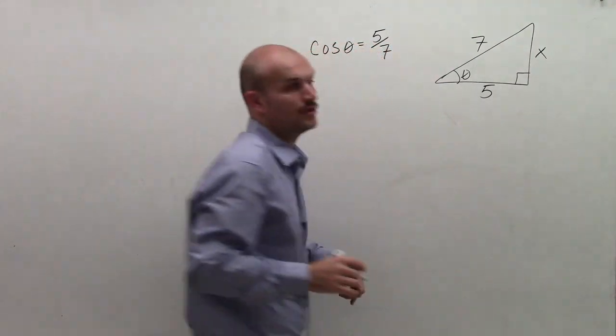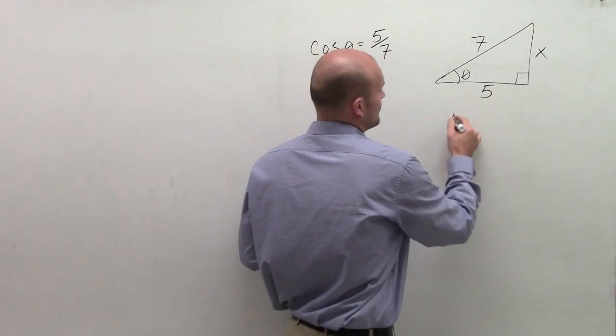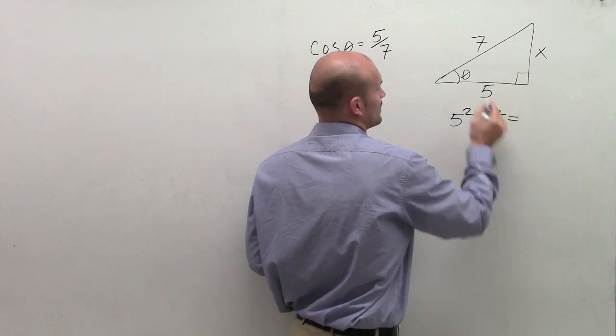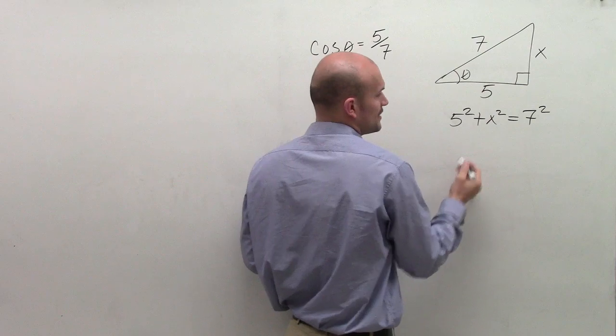Therefore, I do not know what my opposite side is going to be. However, I can use Pythagorean theorem, 5 squared plus x squared, leg squared plus leg squared always equals your hypotenuse squared.